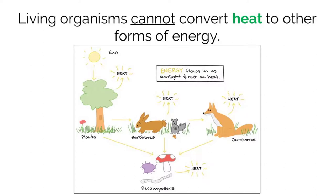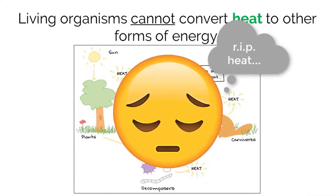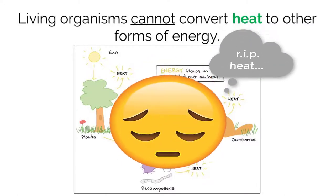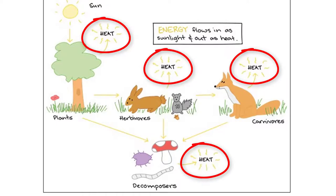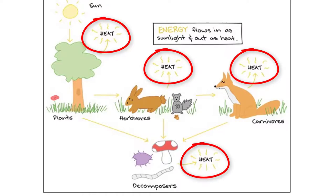As energy flows through an ecosystem, there is a large portion of it lost as heat through every step. Unfortunately, living organisms cannot convert heat into other forms of energy. This means, once the energy is converted into heat, it can no longer be used in the ecosystem. Remember when I said energy enters and exits? Well, this is how it exits. Organisms radiate heat into the atmosphere that is lost to the ecosystem. The good news is, we still have sunlight bringing in more energy to support the needs of the communities.